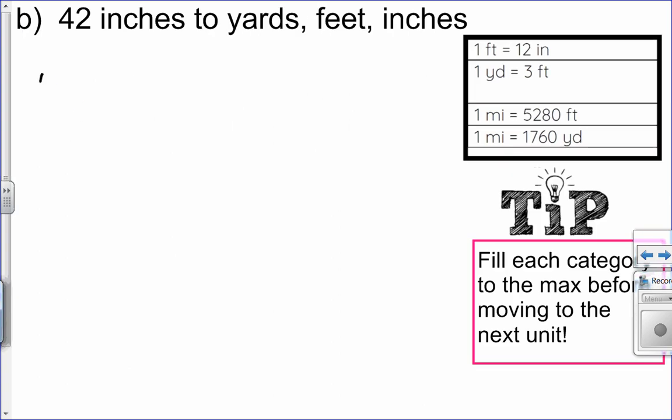Let's try another one. If I have 42 inches, I want to fill that up into yards, feet, and inches. Now, on my conversion statement here, I know that one yard is the same as three feet, but I don't have anything for inches. But let's use what we know about feet. I know that one foot is 12 inches. So three feet would be three times 12, which is 36 inches. So we can use that to help us with our conversion statement.